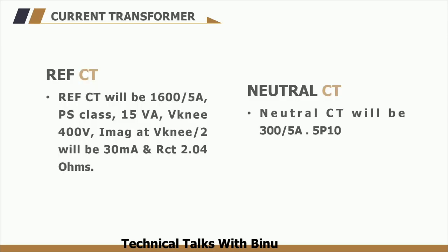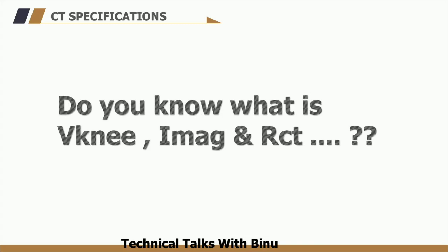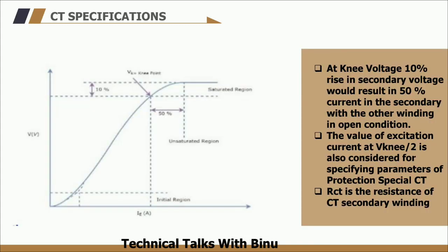The last parameter is the CT. Two CTs are provided in the transformer. The first is the REF CT, used to provide zone protection for the transformer. The parameters of the REF CT are: 1600/5A, PS class, 15VA, Vknee voltage equals 400 V, and magnetization current at Vknee/2 is 30 mA. The resistance of the CT secondary winding is 2.04 ohms. PS means Protection Special. Vknee voltage is defined as the voltage at which a 10% increase in secondary voltage would result in a 50% increase in secondary current.